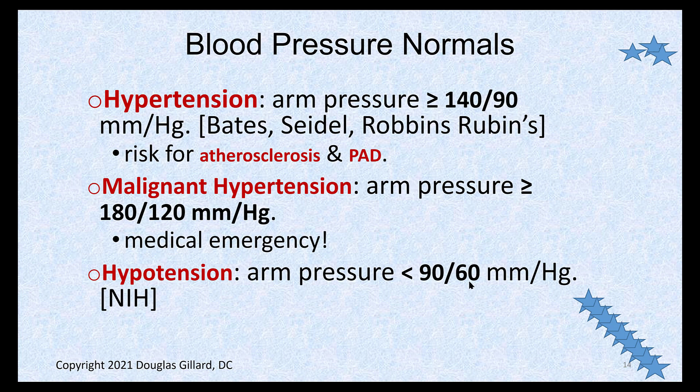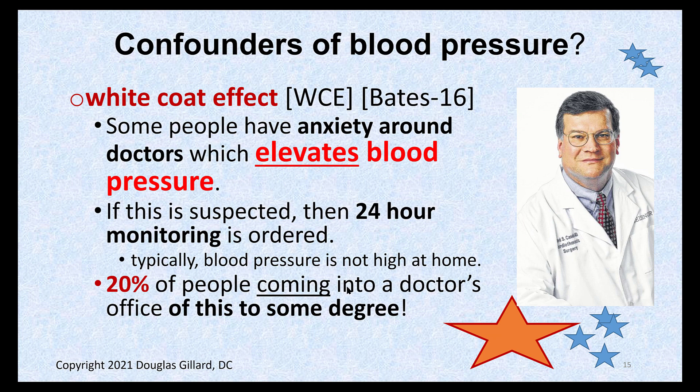Hypotension is an arm pressure less than 90 systolic or less than 60 diastolic. For example, 90/70 or 120/60 would be hypotension. This is less alarming and the diagnosis is more symptom-based — patients will have trouble standing up quickly and get very dizzy. Some heart arrhythmias can also cause this.